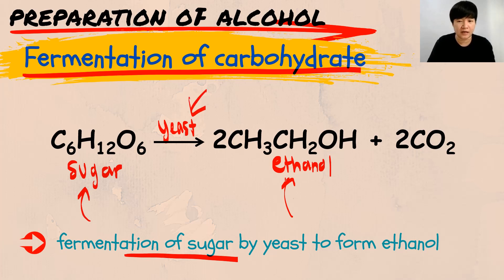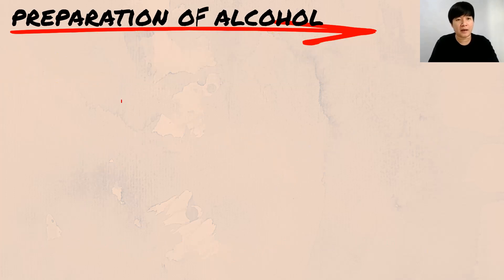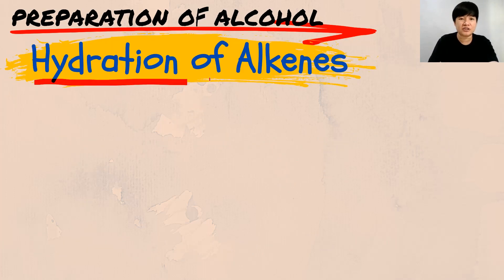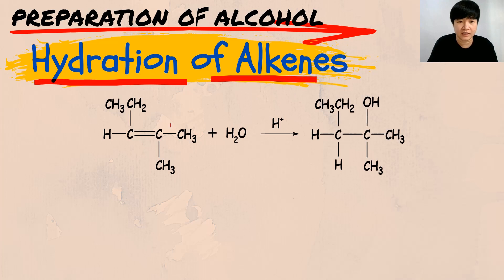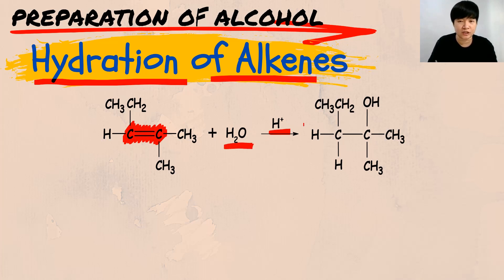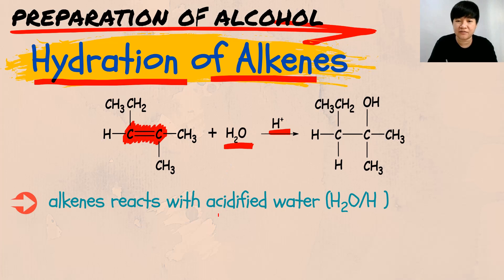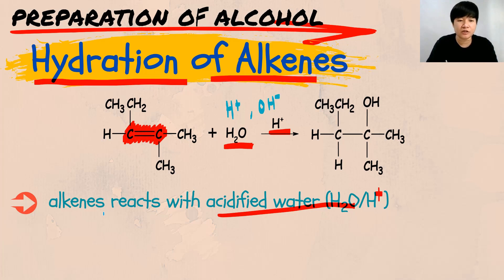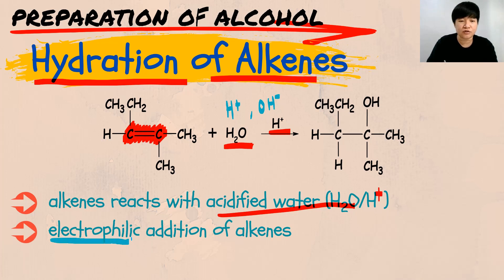The next method to prepare alcohol is the hydration of alkenes, which you learned in topic 3. Hydration of alkenes involves the carbon-carbon double bond — you add H₂O and H⁺ (acidified water), adding H⁺ and OH⁻ into the carbon-carbon double bond.